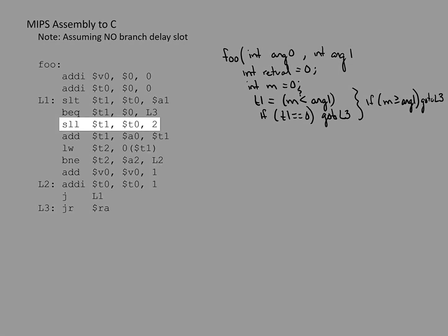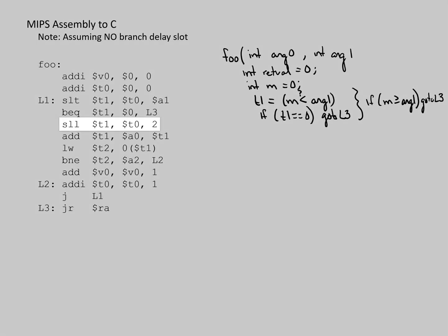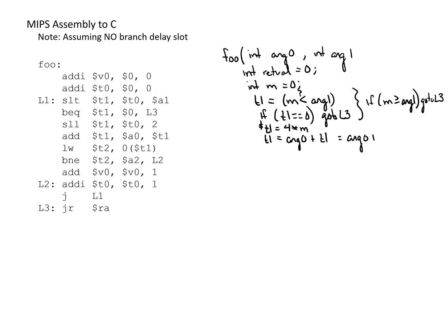The next instruction is a logical left shift, shifting T0 (which is M) left by 2 places, which is equivalent to multiplying by 4. So T1 equals 4 times M. The following add instruction adds this T1 value to argument 0 and stores it back in T1, so T1 equals argument 0 plus 4 times M.